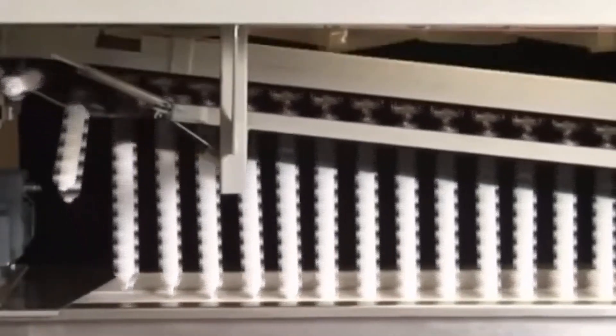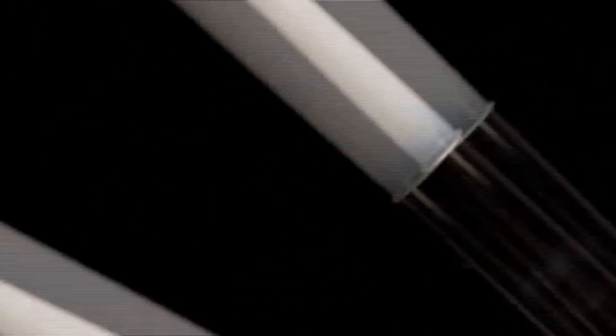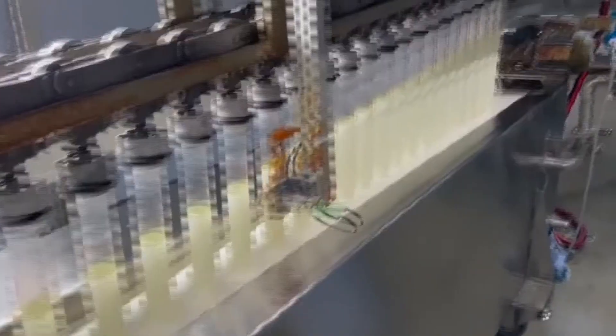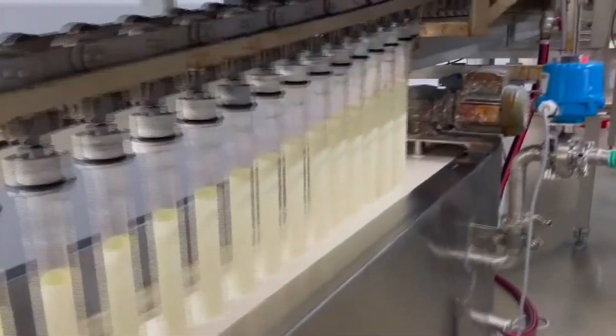After the initial dip, the molds take a brief hiatus to allow the first latex layer to dry before returning for a second dip in the vat. This second layer imparts additional strength and thickness to the condom, concluding the molding process.